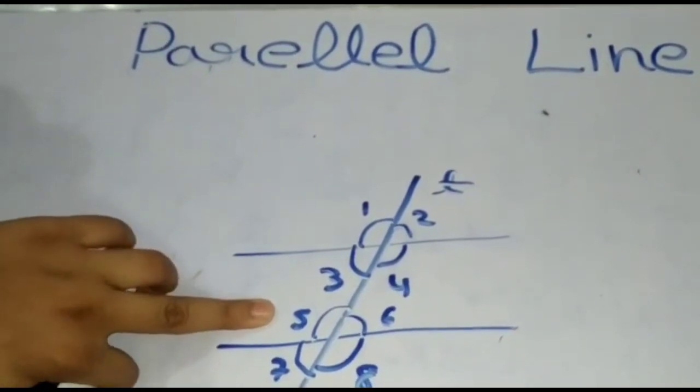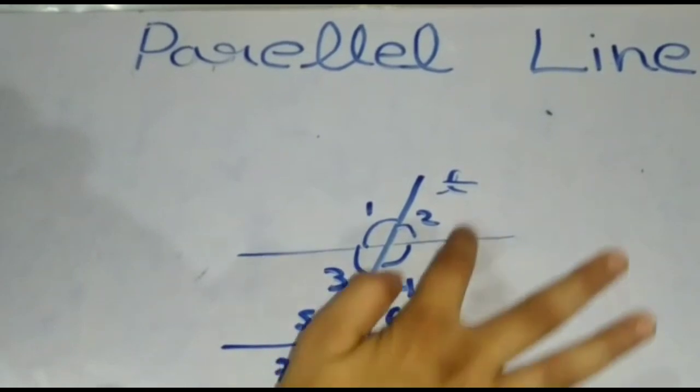First, we learn about corresponding angles. These are angles on the same side, like the upper side of the parallel line in the same direction. Angle 1 and angle 5 are corresponding angles, angle 2 and angle 6 are corresponding angles, angle 4 and angle 8, angle 3 and angle 7 are corresponding angles.